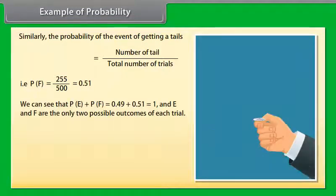We can see that P(E) + P(F) = 0.49 + 0.51 = 1, and E and F are the only two possible outcomes of each trial.